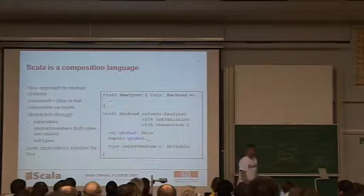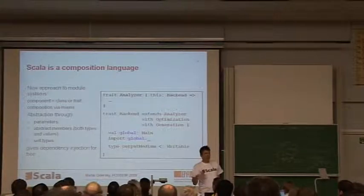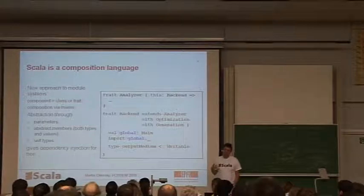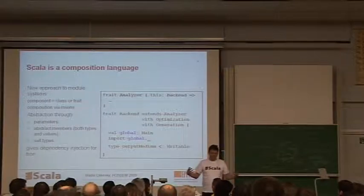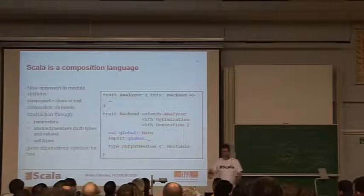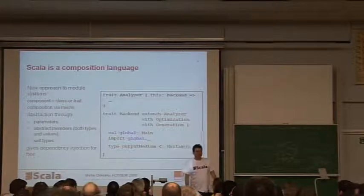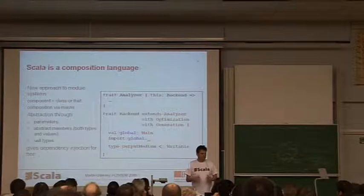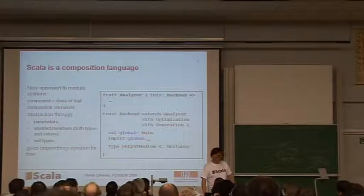Yet another way to look at it is to say Scala is a language for programming in the large, software architecture language or composition language. And in fact, it embodies a completely new approach to the modularity problem, to module systems. So in Scala, a component is a class or a trait. A trait is something in between a class and an interface. You can mix several traits together. And the composition is done with this mixin composition. And you have very powerful ways to abstract, to hide details through parameters, through abstract members, and through self-types. And all this gives you something for which nowadays you need tools, dependency injection tools like Spring. You could say that's already embodied in the language.